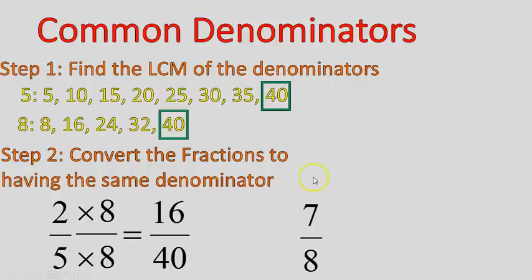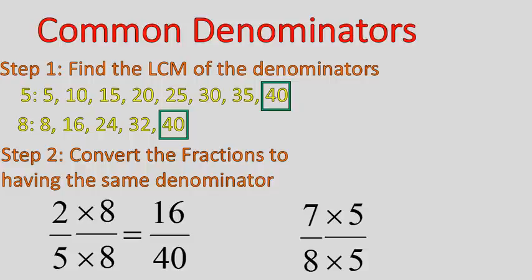Now try converting 7 over 8 to having a denominator of 40. You're going to say: 8 times what gives me 40? 8 times 5 is 40, so I multiply the top and bottom times 5. My fraction is now 35 over 40. Notice how I've converted both fractions to having a denominator of 40.